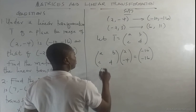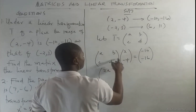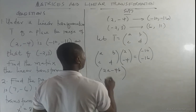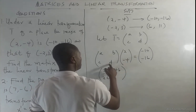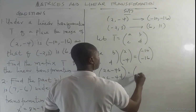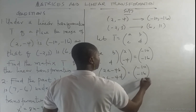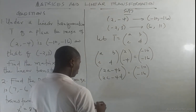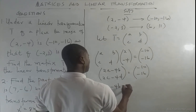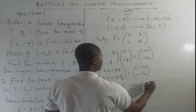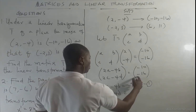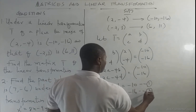Multiplying: a times 2 gives 2a, b times -4 gives -4b in the first row; c times 2 gives 2c, d times -4 gives -4d. This equals (-10, -16). Equating corresponding entries: 2a - 4b = -10 (equation 1), and 2c - 4d = -16 (equation 2).